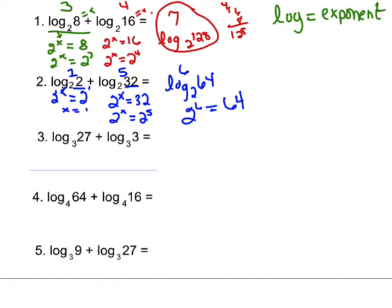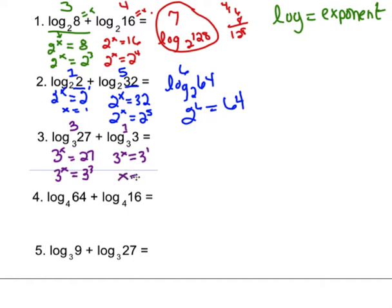This is condensing the logs to make them a little bit easier to solve. On this one I simplify: 3 to the what equals 27, so 3 to the x equals 3 to the third — that's 3. Log₃3: anytime these are exactly the same it always comes out to 1, because 3 to the x equals 3 to the first, so x equals 1. So 3 plus 1 is 4, which is the same as log₃81, and 3 to the fourth equals 81.